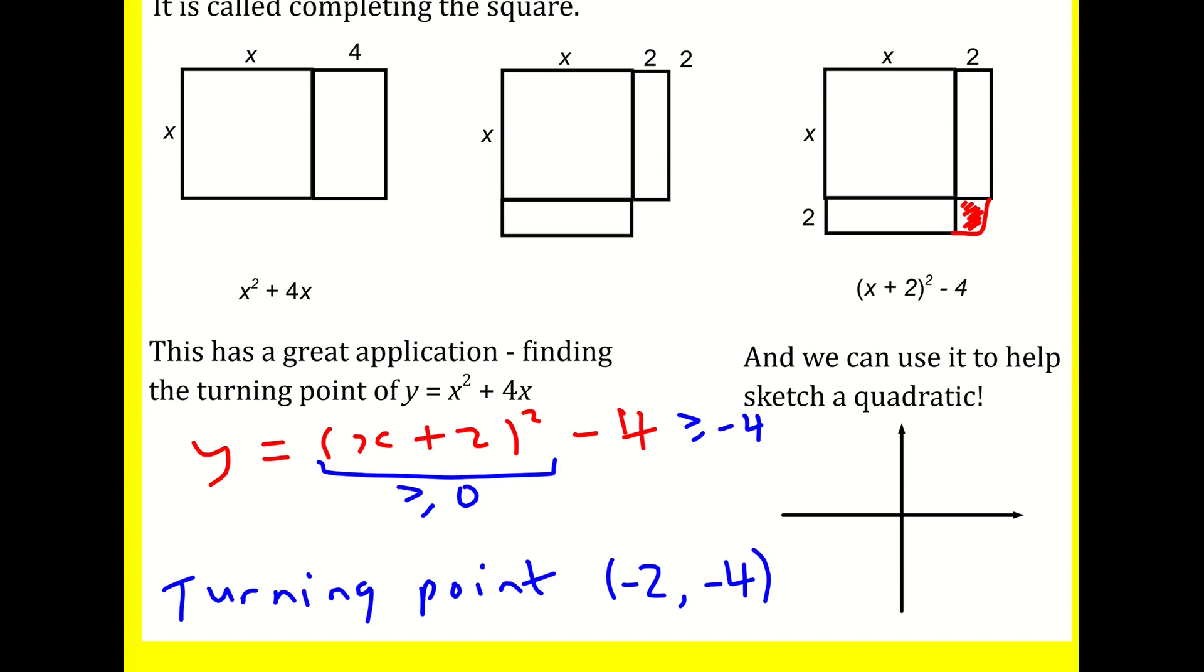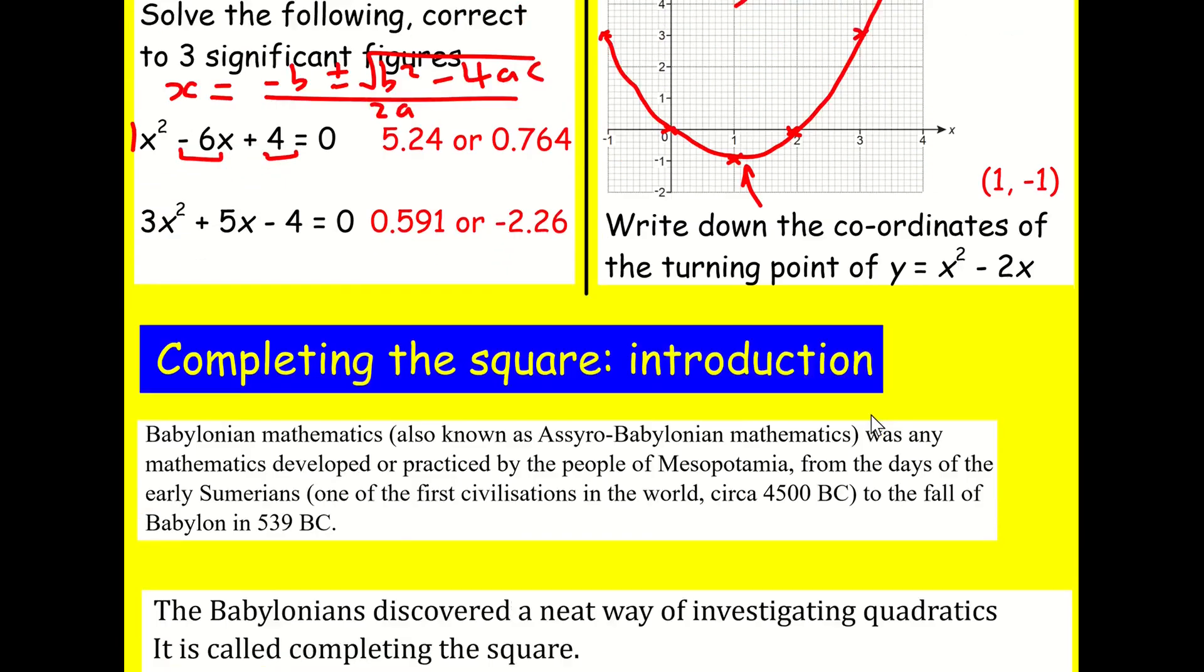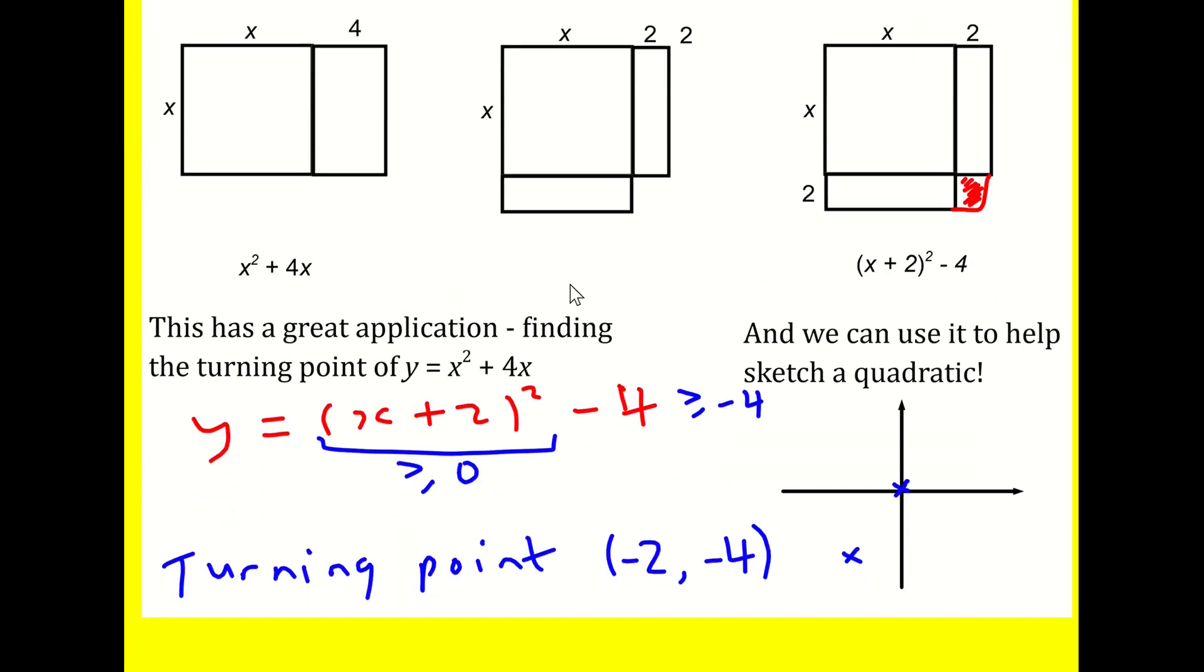That will make the bracket 0, a bit like when we solve quadratics. So the turning point is minus 2, minus 4. You can get that by writing it in its completed square form. And this can actually help us to sketch a quadratic. So this quadratic here, when x is 0, y will be 0. I'll know it's going to go through the origin. But now I've got one extra piece of information. I know that the turning point is going to be minus 2, minus 4. It's going to be down here. And that is enough for me to sketch it, because quadratics always, they're called parabolas. They always look like this. Actually, if there's a negative in front, they look like that. So we call these happy quadratics and sad quadratics. But we've got a happy quadratic here.